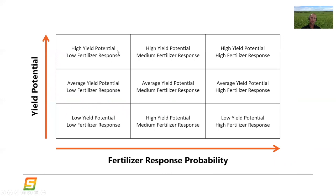For example, we might have a high yield area with relatively low fertilizer response. This might be a really rich, fertile depression with lots of topsoil, lots of mineralization potential, and access to water — the kind of area where your crop often lodges. There's an opportunity to actually minimize the amount of applied nitrogen and better match it to what the soil is supplying and what the crop needs.